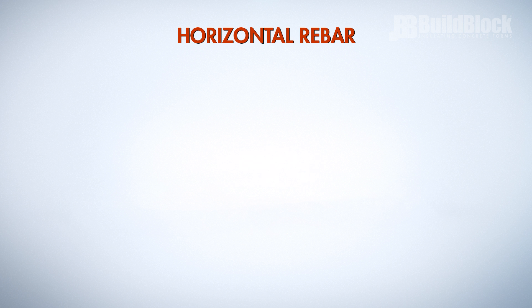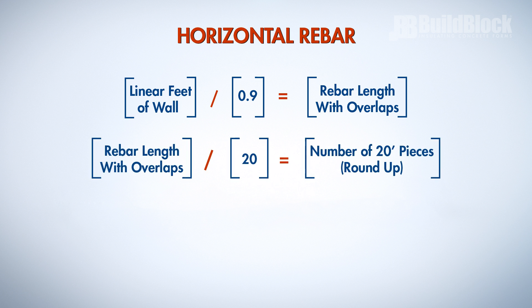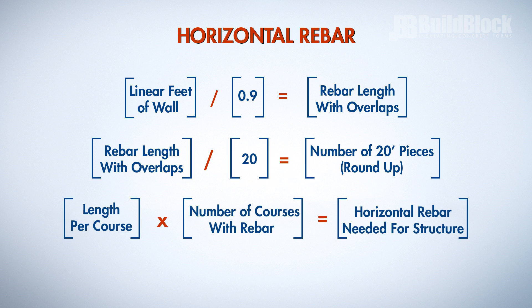For horizontal rebar, take the linear feet of wall and divide it by 0.9 to account for overlaps. Then divide that total by 20 and round up. This will give you the total number of 20 foot rebar pieces needed per course. Multiply the length per course by the number of courses that will have rebar to get the total length of horizontal rebar needed for the structure.